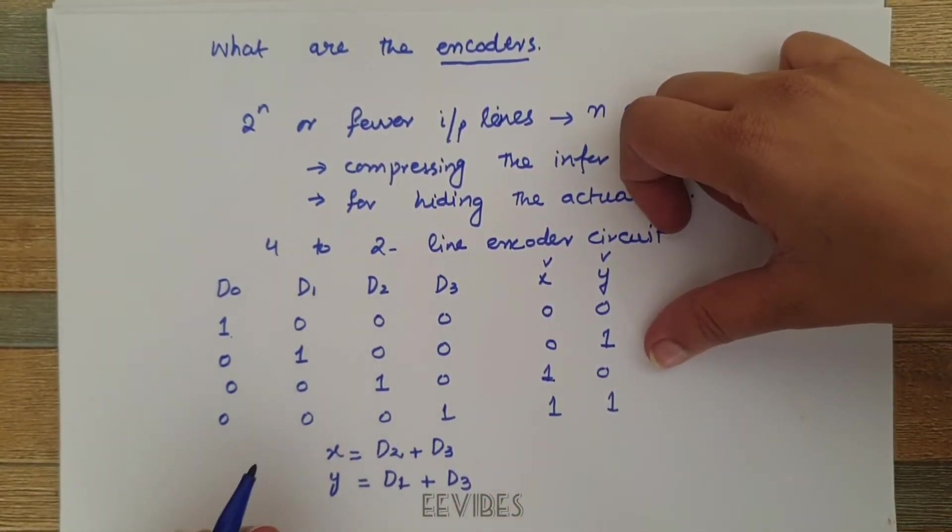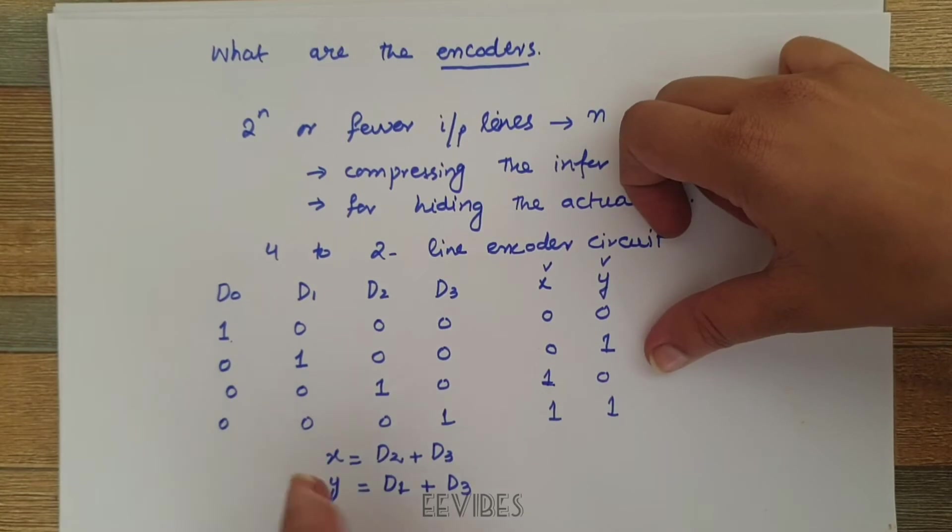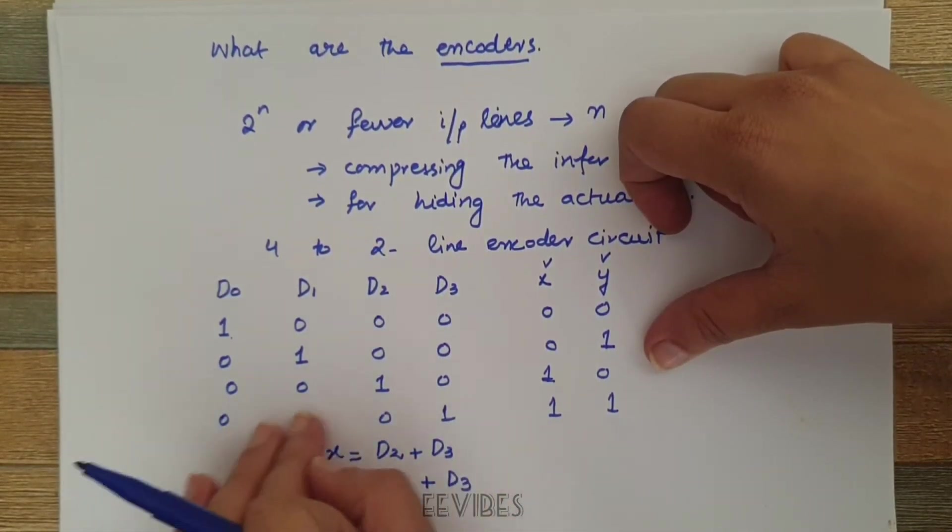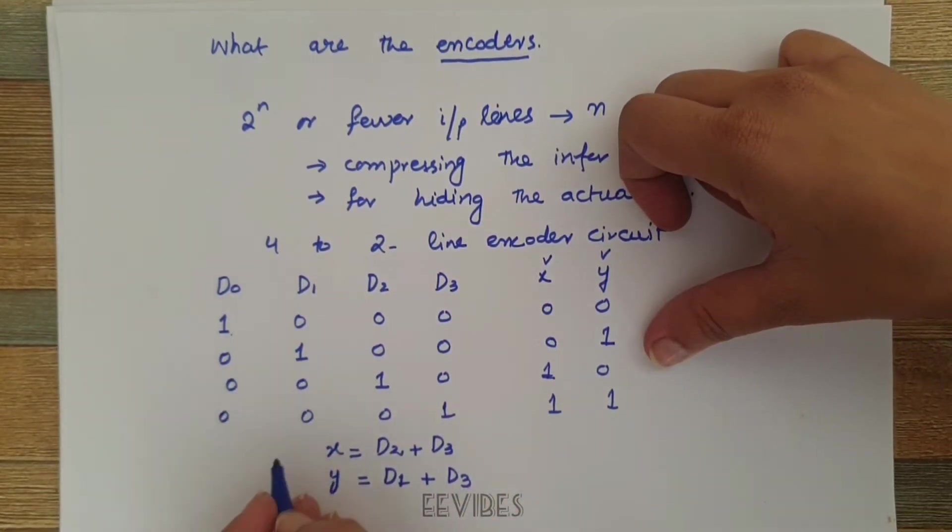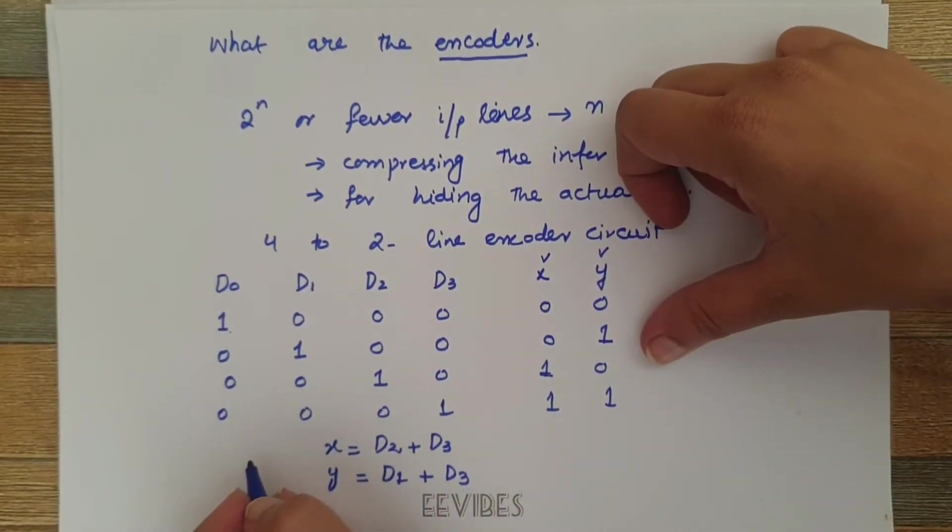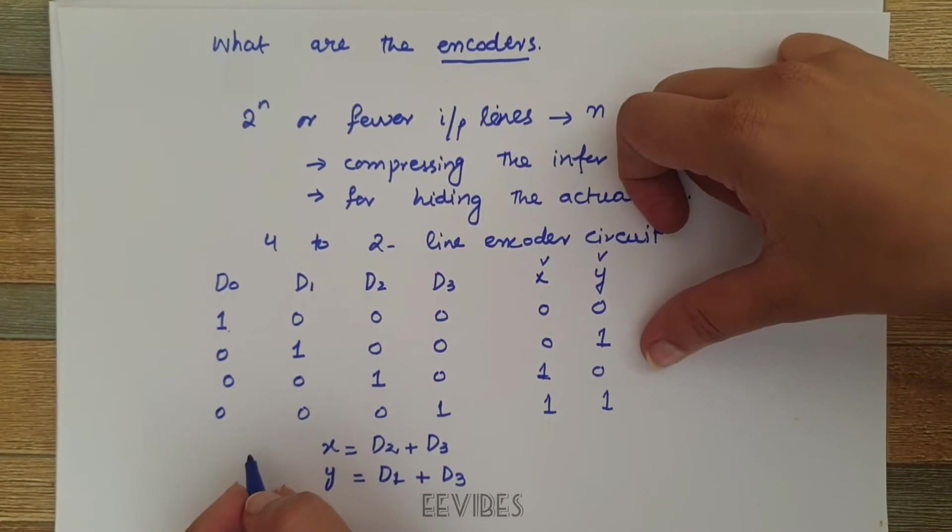So you can see by taking the OR of these input lines we can design a 4-to-2 line encoder circuitry. Now there is a problem associated with this encoder circuit design.